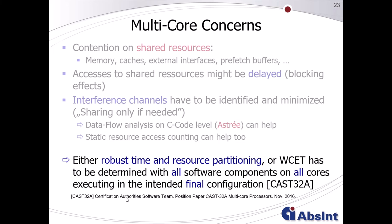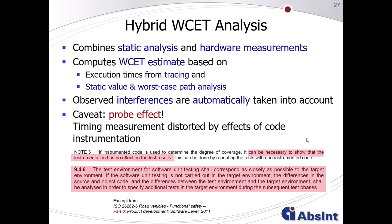Remember the CAST proposal: either have robust time and resource partitioning, or observe and determine the worst-case execution time while all software components are running on all cores in the intended final configuration. You might be able to ensure robust partitioning on the software architecture side, but no longer on the hardware for the P4080. So you have to stick with the second part of that proposal. For that, Absint introduced the hybrid worst-case execution time analysis approach.